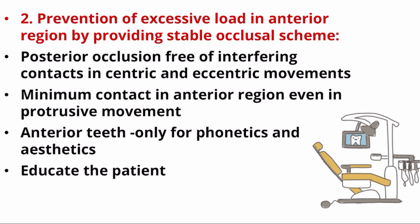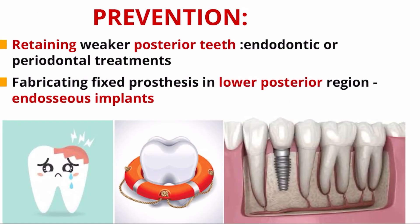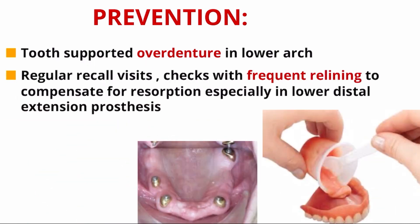Educate the patient that the anterior teeth in the denture are only for phonetics and aesthetics, and that while chewing, occlusal load should be given only on the posterior teeth. For prevention: retain weaker posterior teeth through endodontic or periodontal treatments, or fabricate fixed prosthesis in the lower posterior region. If lower posterior teeth are missing, provide fixed prosthesis such as endosseous implants, or a tooth-supported overdenture in the lower arch. Regular recall visits and frequent relining to compensate for resorption, especially under the lower distal extension prosthesis, are also recommended.